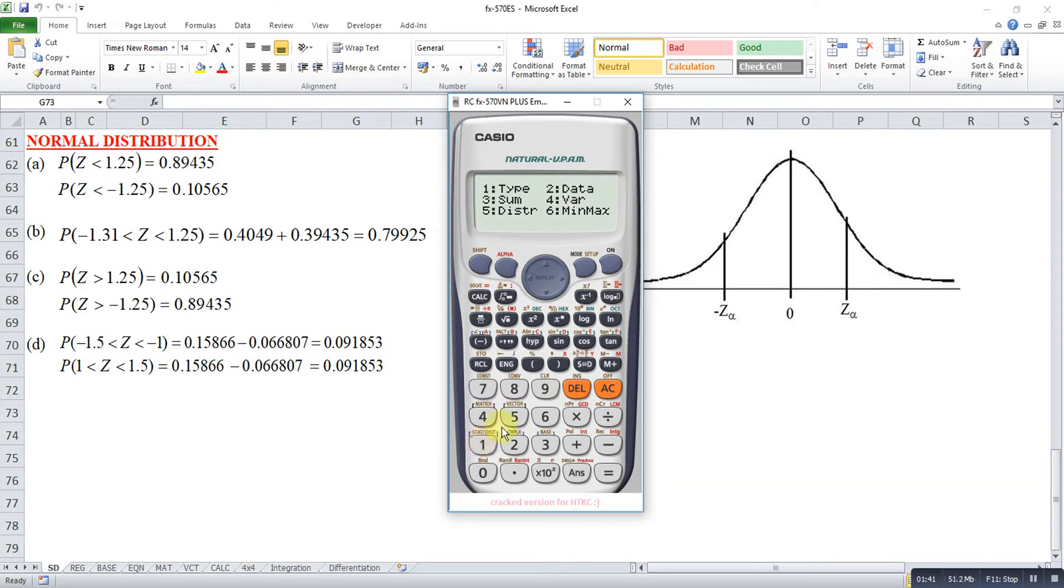Shift 1 also. Then 5 distribution, 3. Negative 1.3, then bracket. Plus Shift 1, 5, 3. 1.25 bracket. So the answer is 0.7925.